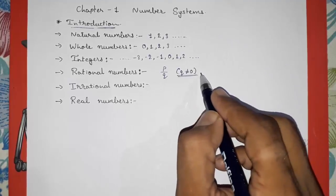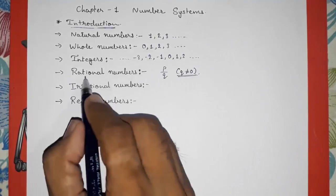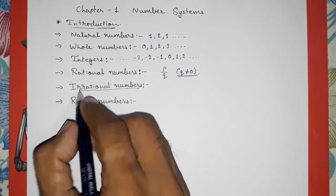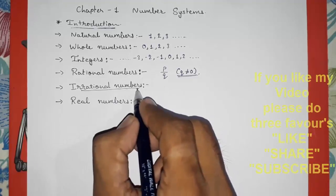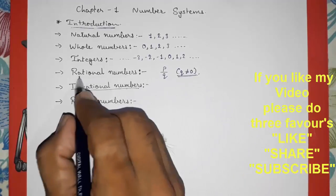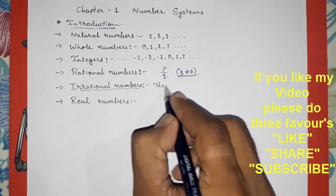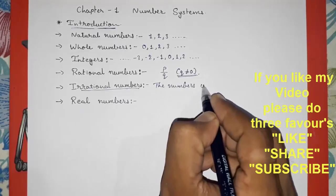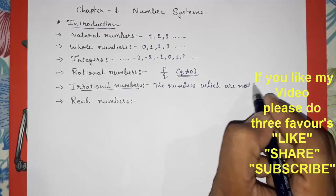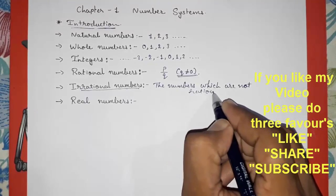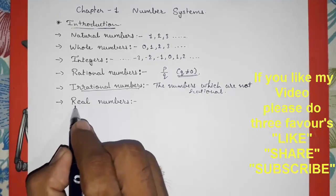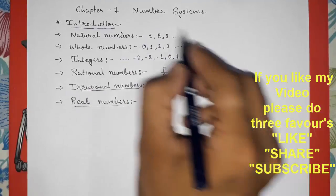All these things you learned in standard 8. Now in standard 9th you are going to learn one more type of number — that is irrational numbers. There is no perfect definition for irrational numbers, but we can say the numbers which are not rational are called irrational numbers.